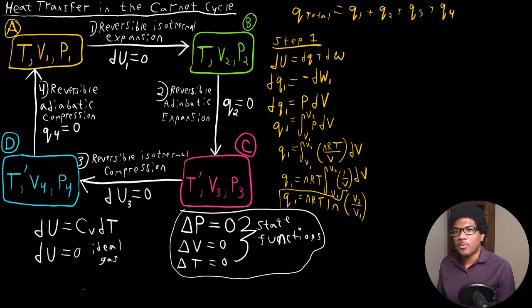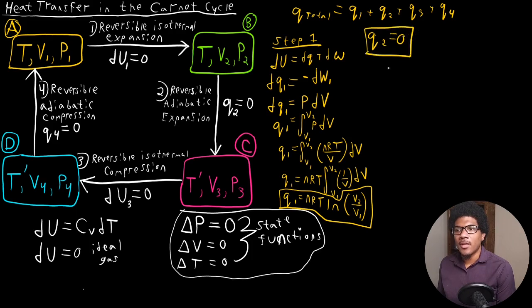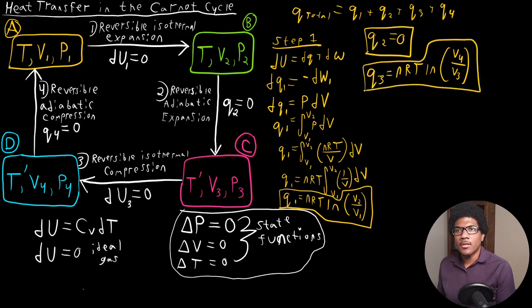That's going to give you a q1 expression of nRT ln(v2/v1). So that's going to be our expression for q1: nRT ln(v2/v1). Now if we go to step 2, it's an adiabatic process, so q2 is going to be equal to 0. And if we do a similar process for step 3 that we did for step 1 — this is another isothermal compression — then we end up with the following expression for q3: nRT ln(v4/v3). Then for q4, it's another adiabatic process, so that's going to be 0.